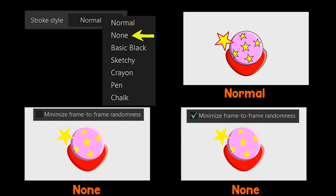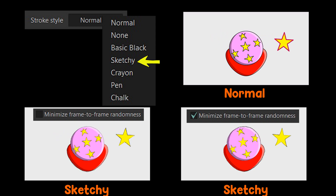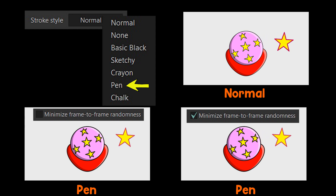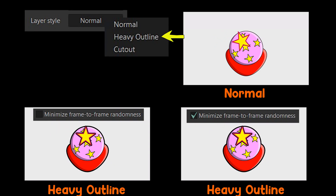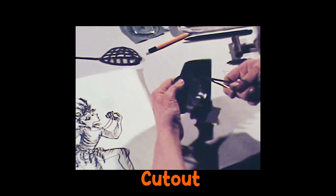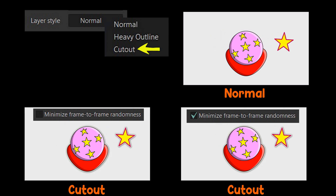For stroke styles: None makes every stroke you've applied in the Style window invisible. Basic Black makes all stroke colors black regardless of their actual color. Sketchy adds a sketchy effect to strokes. Crayon adds a crayon effect. Pencil style changes all strokes to the same width, no matter their actual width. Chalk makes strokes white and adds noise as if drawn with chalk. For layer styles: Heavy Outline adds a black stroke around each layer — even if a layer already has a stroke, it adds another one around it. Cut Out simulates the old animation technique of cutting paper shapes and connecting them, so Moho adds a drop shadow to every layer as if they're pieces of cardboard.